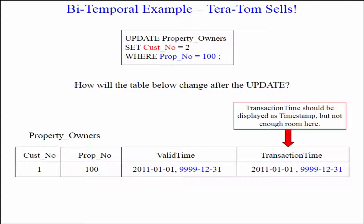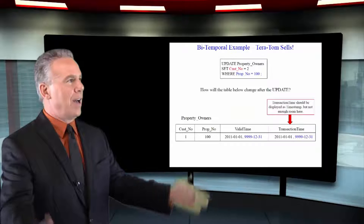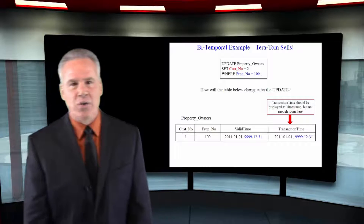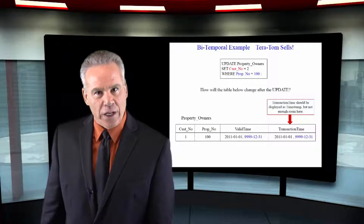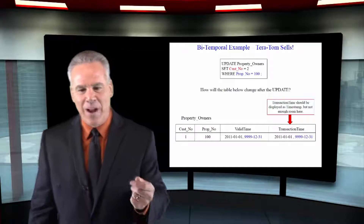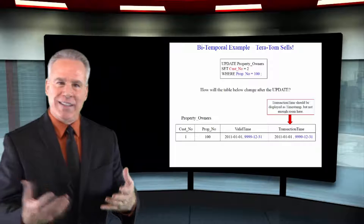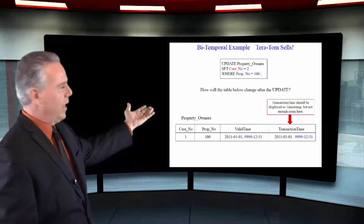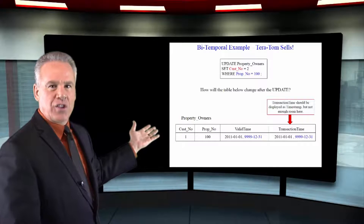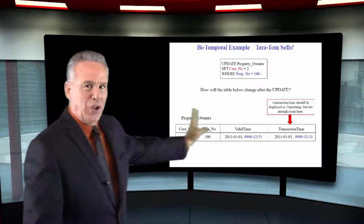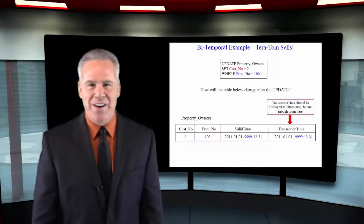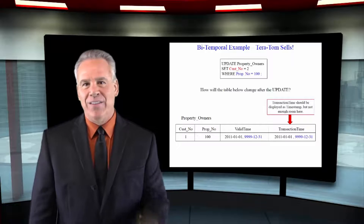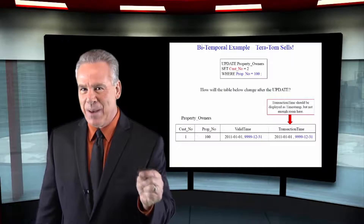On February 14th, Valentine's Day, Terra Tom sold property 100 to a gentleman named Socrates. That guy thought he knew everything. We do an update statement, and we say: UPDATE property owners SET customer number equals 2 WHERE property number equals 100. And now this is going to be updated in the database.